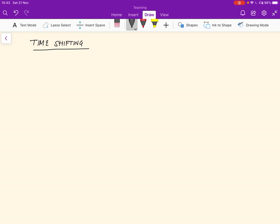The second property we want to study is called time shifting, which says that if x(t) is a function of time whose Fourier transform is capital X j omega,